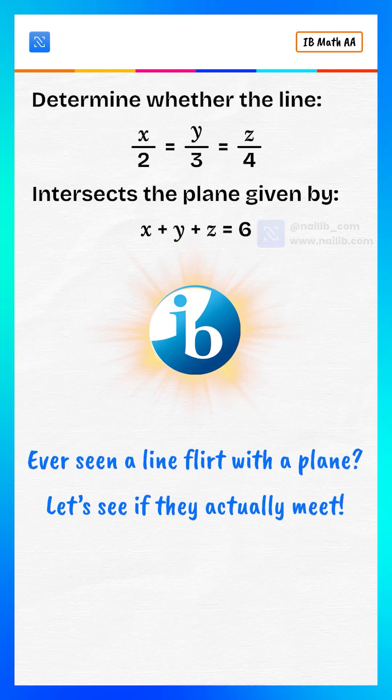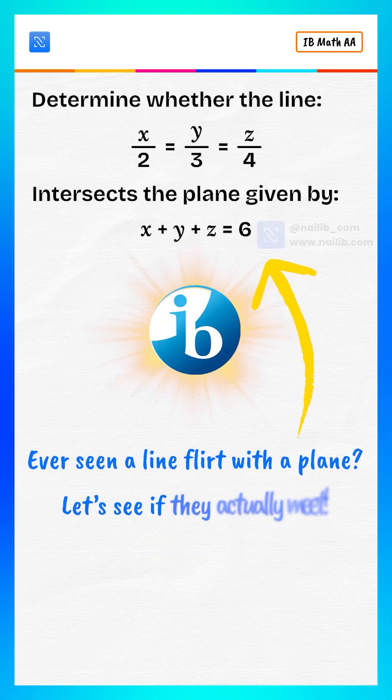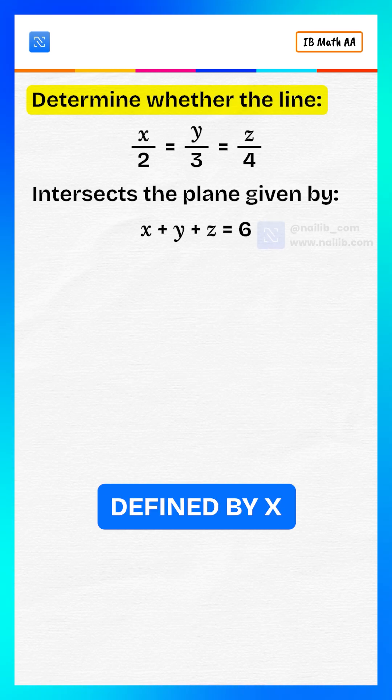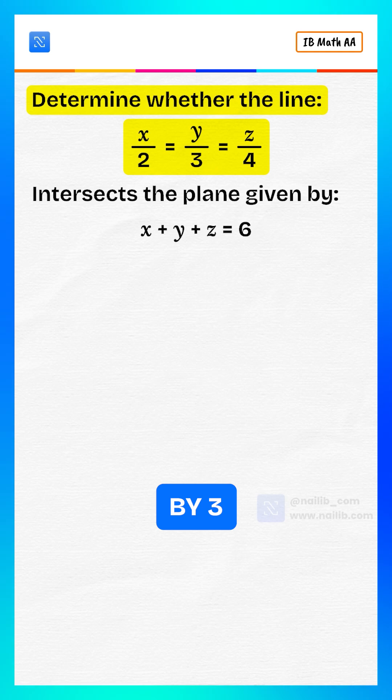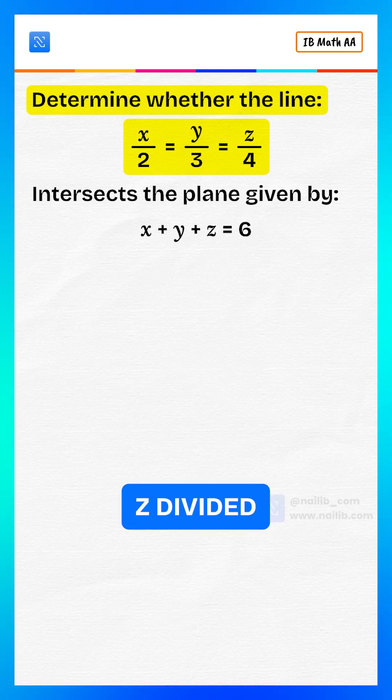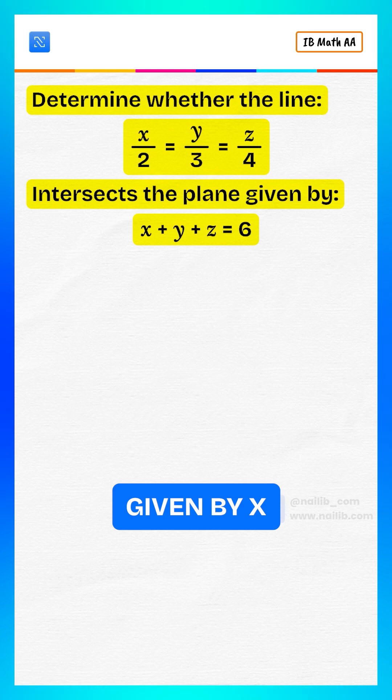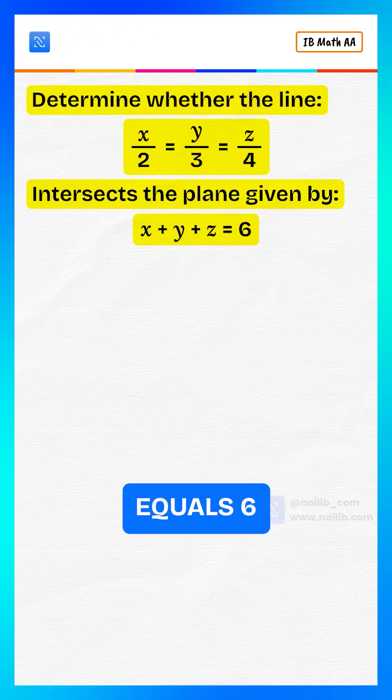Ever seen a line flirt with a plane? Let's see if they actually meet. Determine whether the line defined by x divided by 2 equals y divided by 3 equals z divided by 4 intersects the plane given by x plus y plus z equals 6.